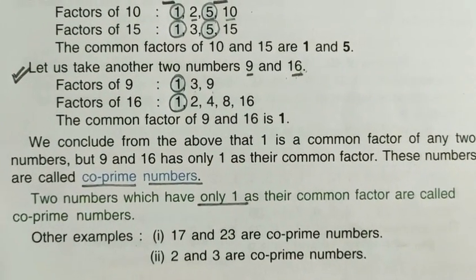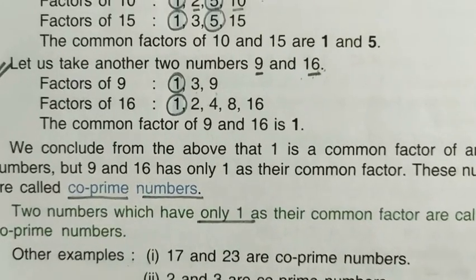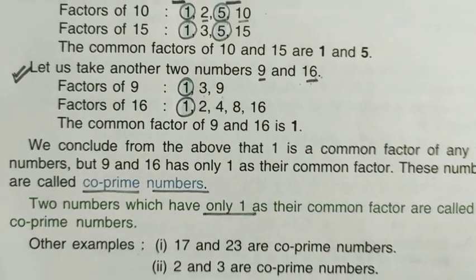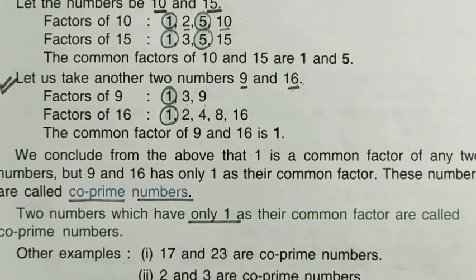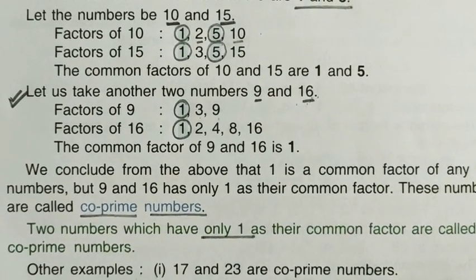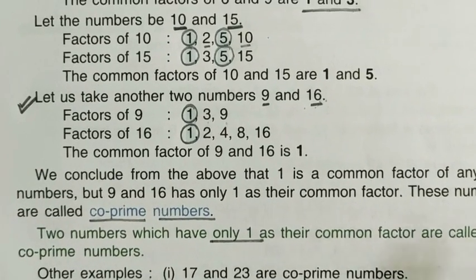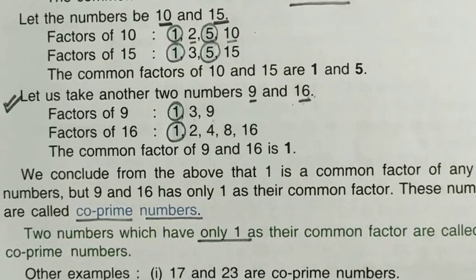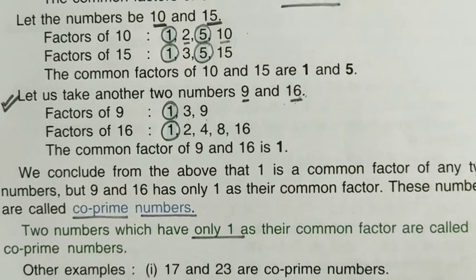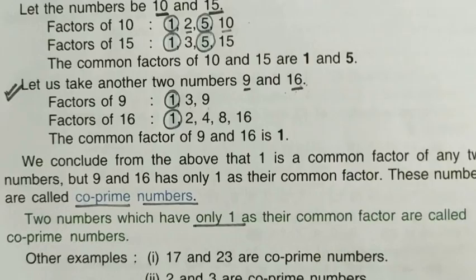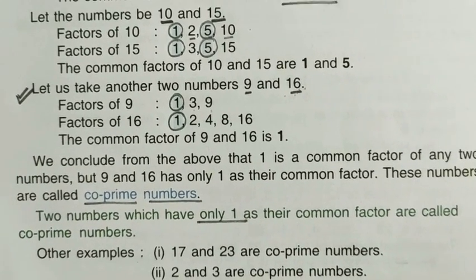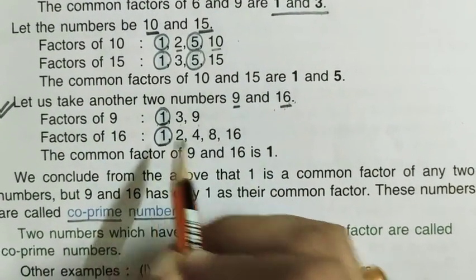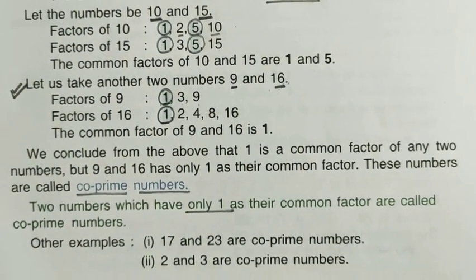That common factor is 1. As we learned in the previous chapter, every number has at least two obvious factors: 1 and the number itself. So the common factor here is only 1. Every number has 1 as a common factor.